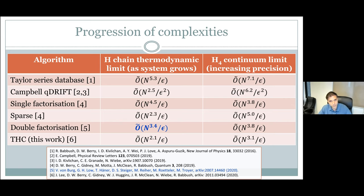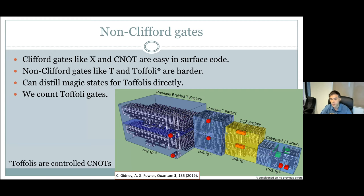The complexity is quantified in terms of the number of non-Clifford gates, ignoring Clifford gate complexities. The reason is that in the surface code it's much, much easier to do Clifford gates, but non-Clifford gates — things like T gates and Toffolis — require distilling special magic states with schemes like those shown here, and these tend to be so much more costly. Our algorithms tend to only need Toffoli gates, and Toffolis are controlled-controlled-NOT gates.